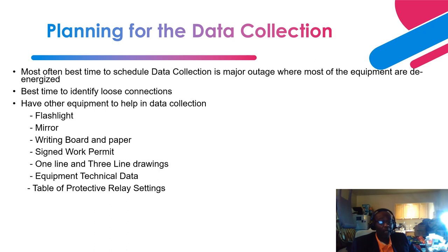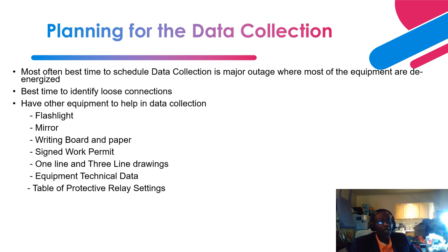These are some devices and equipment that will help you in your data collection. The first is a flashlight — it helps you look at certain areas that are very dark. You also need a mirror to magnify certain prints, because some equipment has been in operation for 20, 30, 40, or 50 years, and the nameplates may be worn out due to contaminants such as oil collecting on them, making them very difficult to read. A mirror helps you magnify those prints and collect that data.